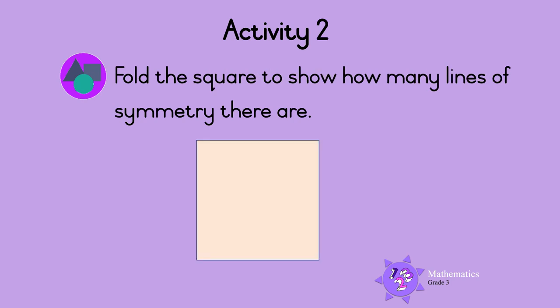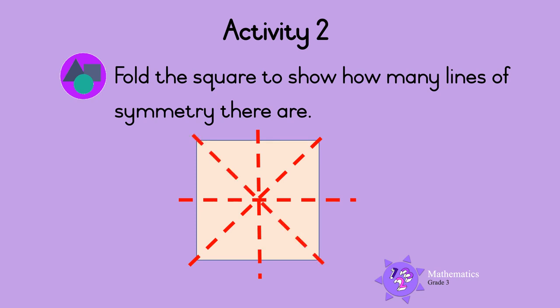Now fold the square to show how many lines of symmetry there are. Let's do this together. You can fold the square on this line of symmetry, or on this second line of symmetry, or on this third line of symmetry, or on this fourth line of symmetry. So a square has four lines of symmetry. Well done!